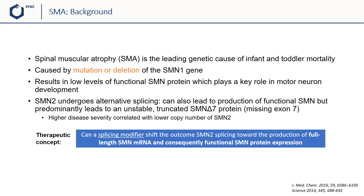Spinal muscular atrophy, or SMA, is the leading genetic cause of infant and toddler mortality. It is caused by a mutation or deletion of the SMN1 gene, or survival of motor neuron 1 gene. This results in low levels of functional SMN protein, which plays a key role in motor neuron development. There is also another gene called SMN2, which undergoes alternative splicing, meaning particular exons or regions of that gene may be included within or excluded from the final processed messenger RNA, or mRNA, produced from that gene. SMN2 can also lead to the production of functional SMN protein, but predominantly leads to an unstable truncated SMN delta 7 protein, which comes from the missing exon 7.